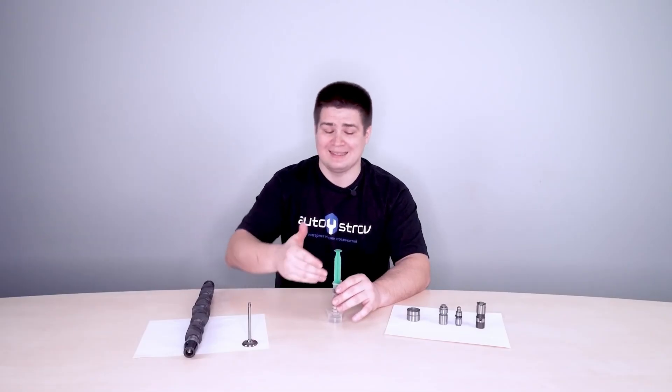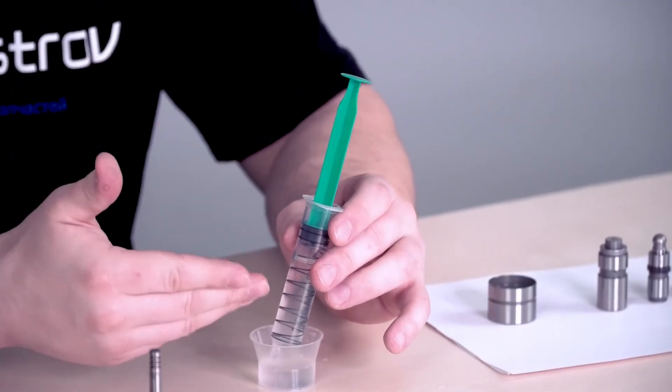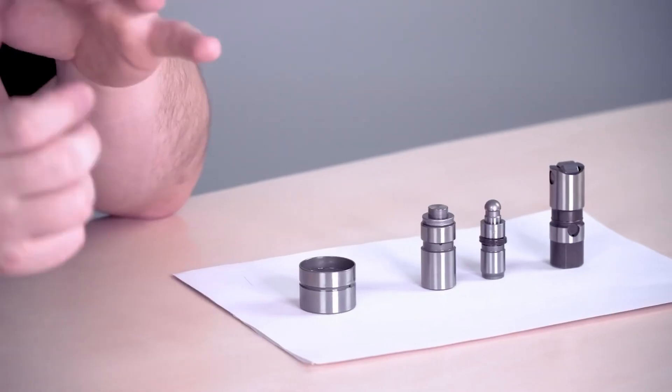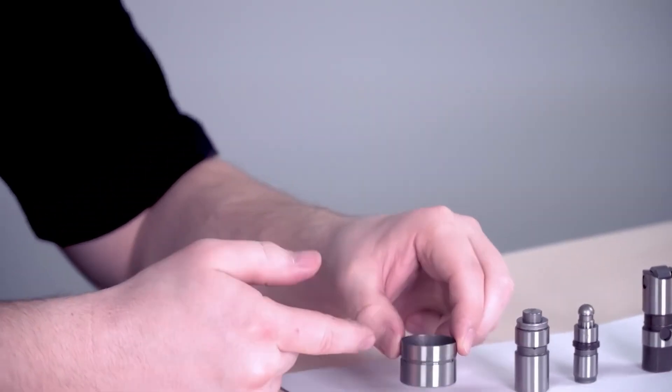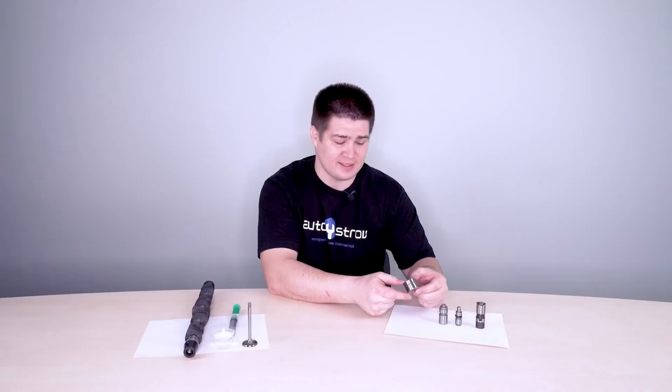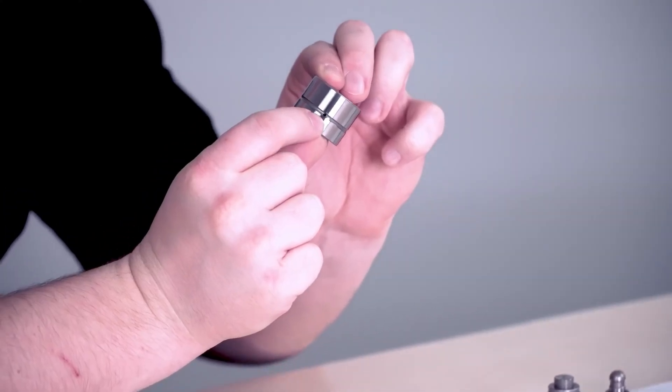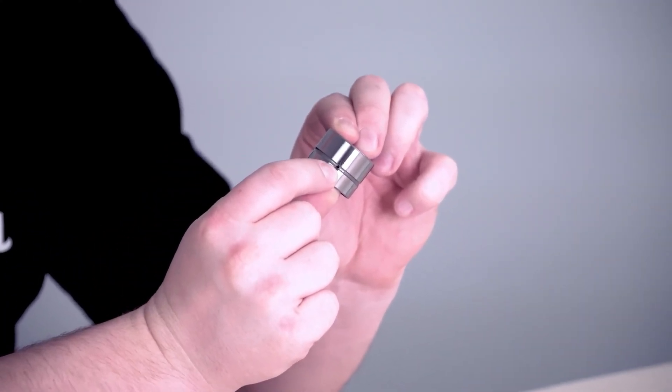This is how the hydraulic lifter works. It should be noted that oil is involved in the operation of the hydraulic lifter. So there are always holes conducting the body and plunger oil in the hydraulic lifter through which this oil enters. In this case, this is a small hole. Perhaps it will not be very well seen on the camera.